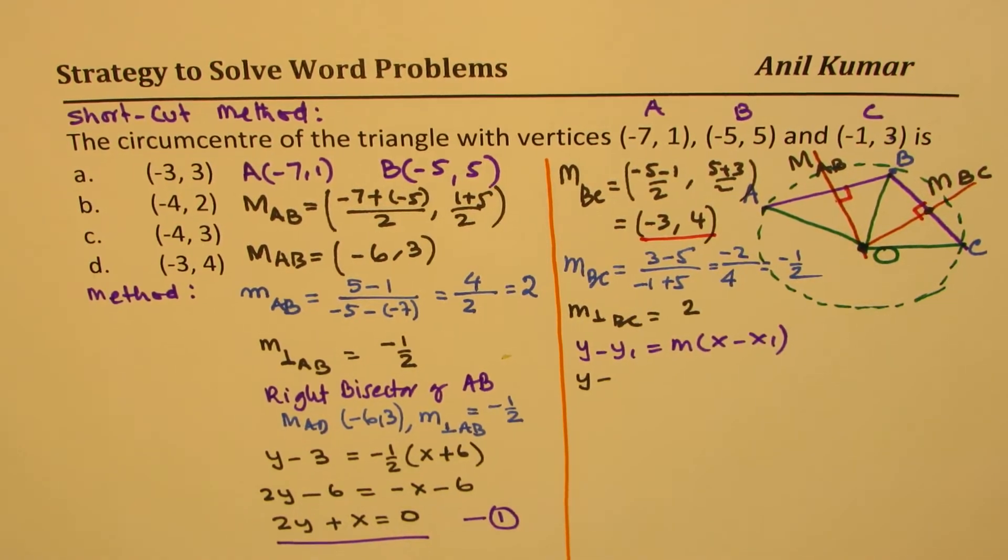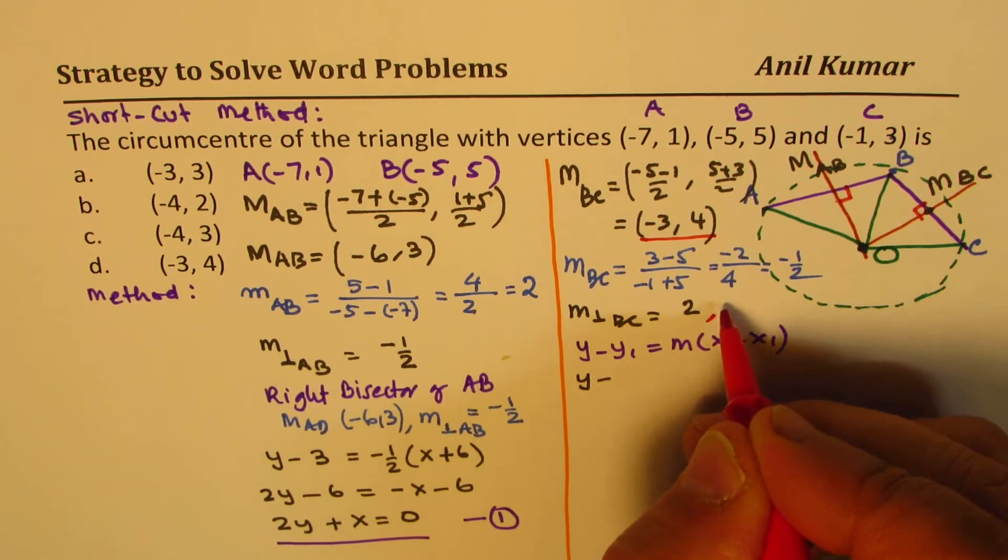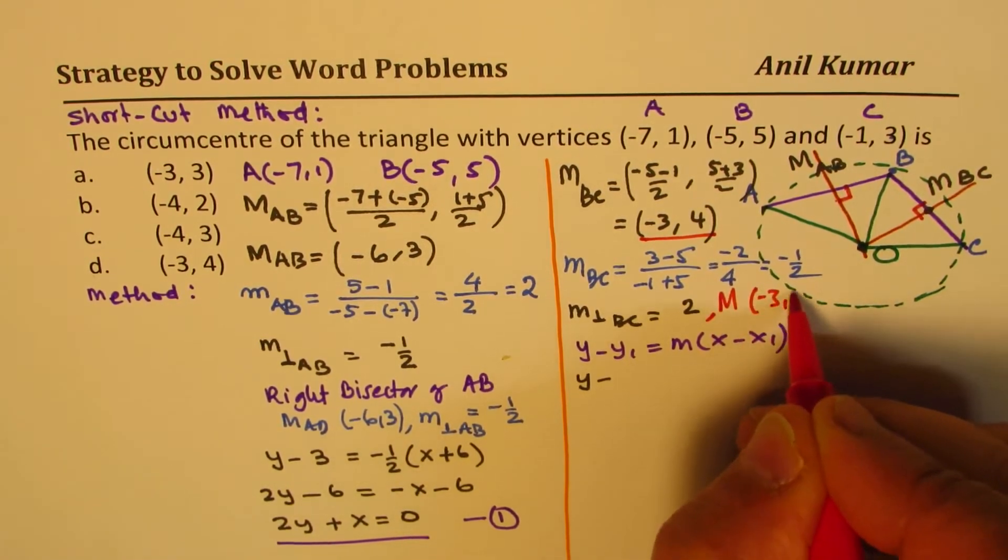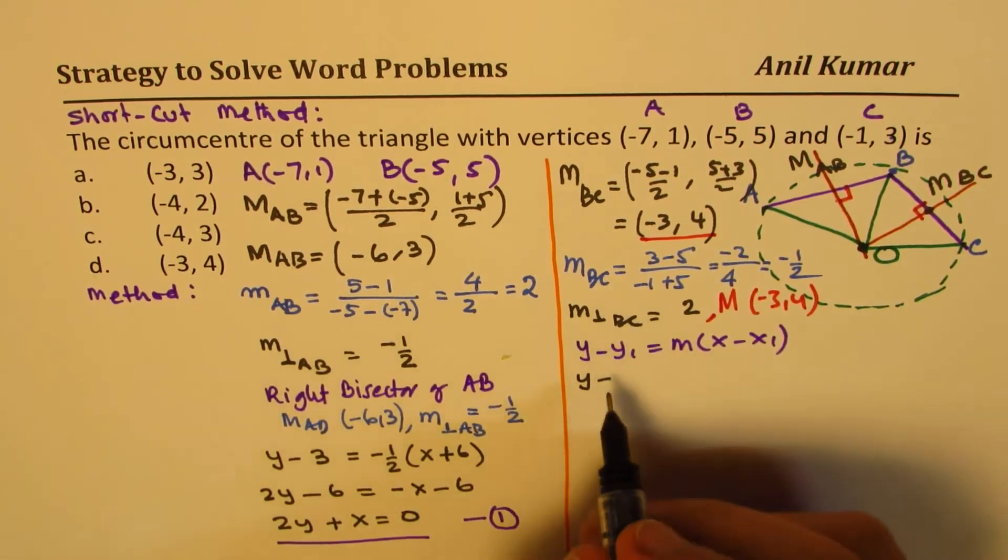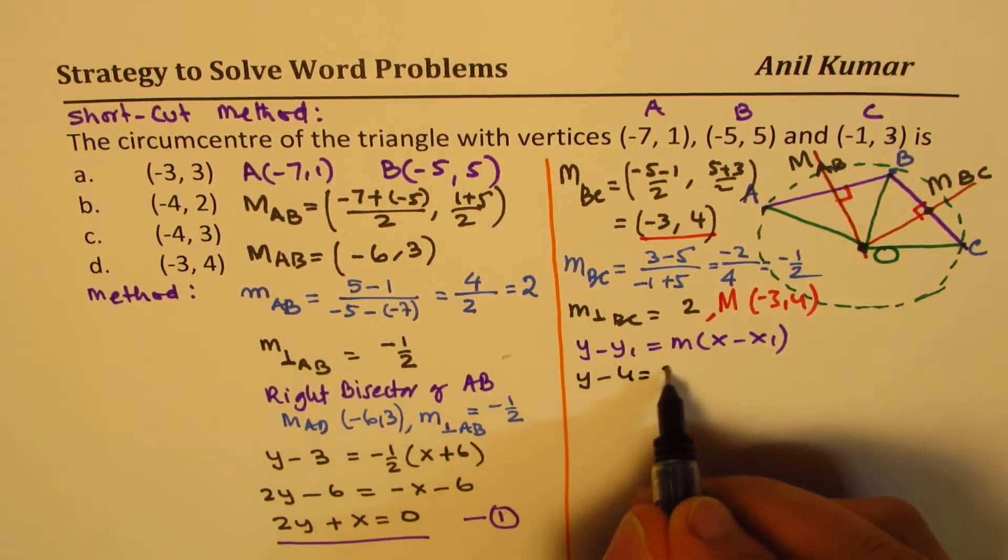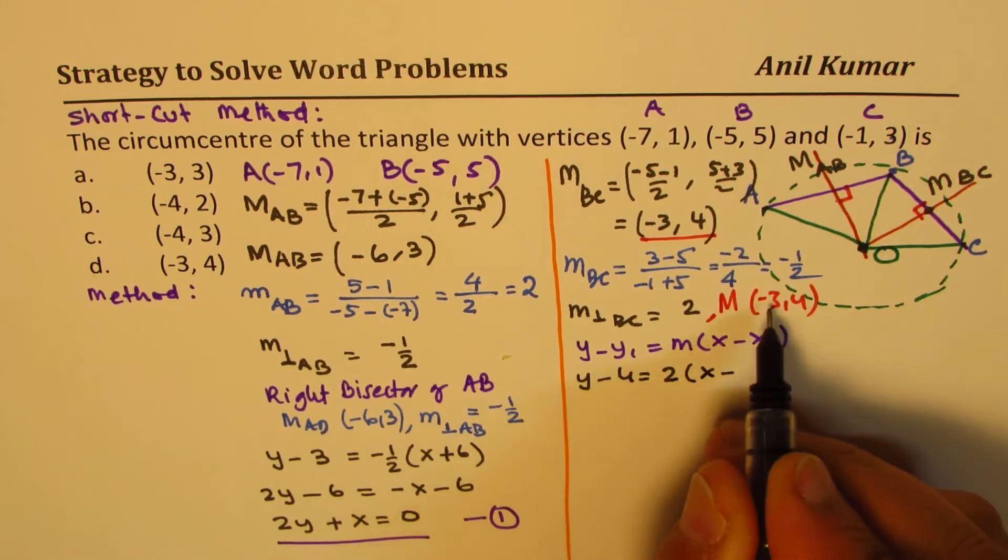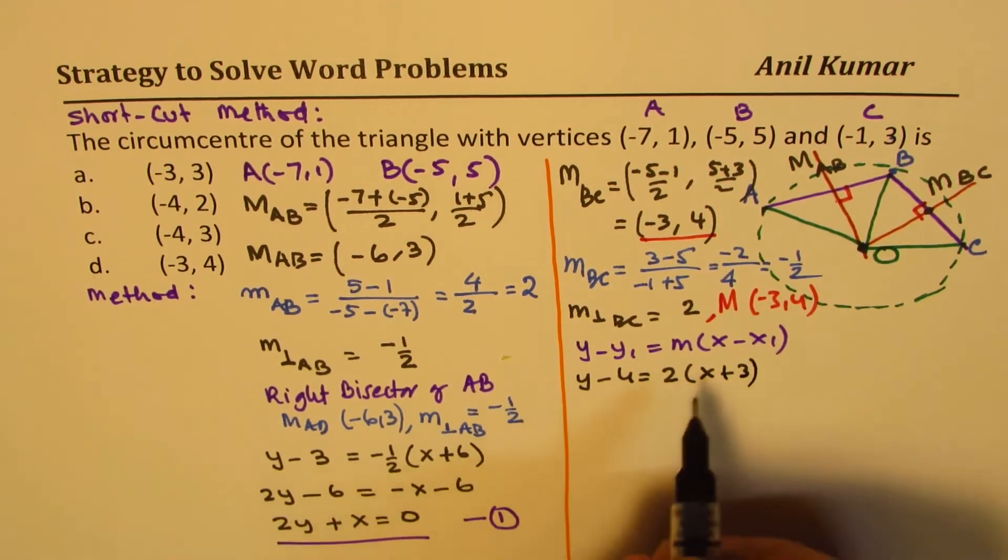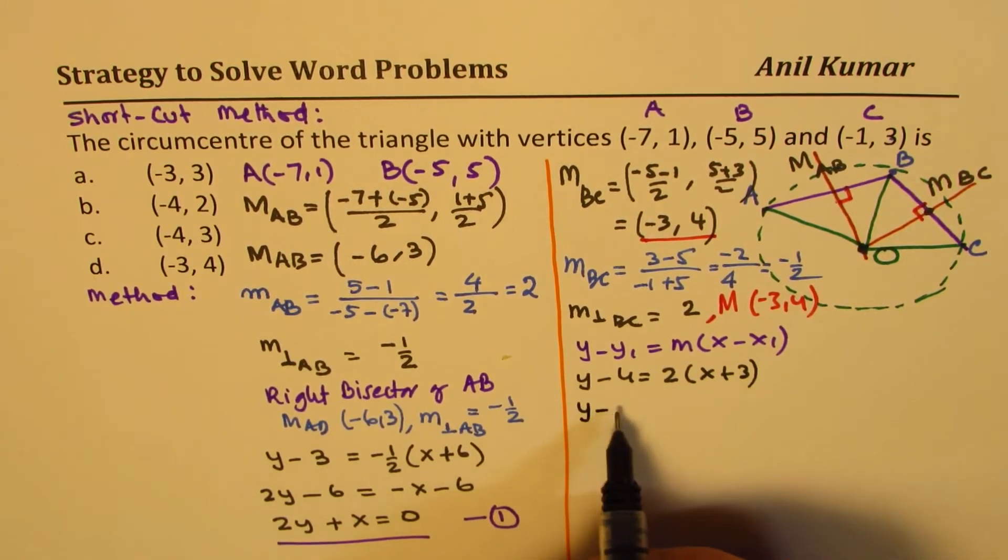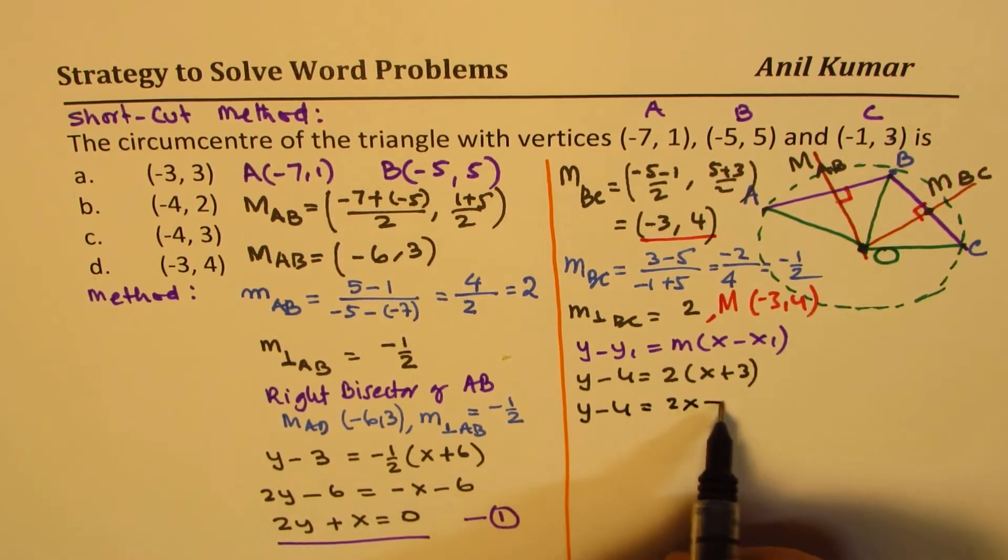And we are going to use the slope, which is 2. So the midpoint is (-3,4). So y - 4 equals to slope of 2, x minus -3 makes it plus 3. So that gives you y - 4 equals to 2x + 6, bring 6 to this side,